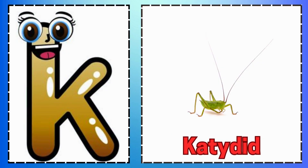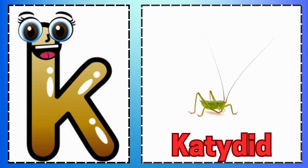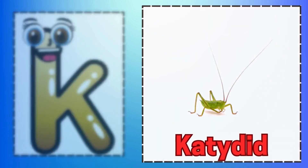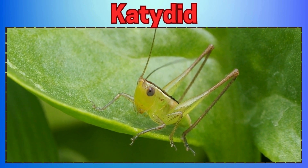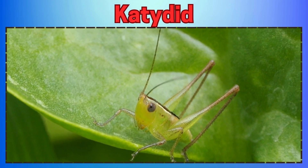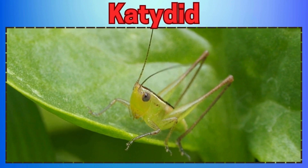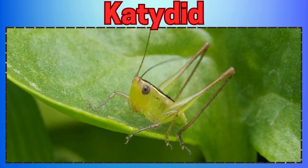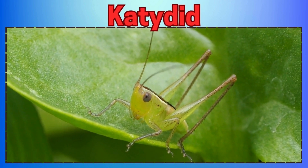W is for Water Strider. X is for Xerces Blue, Though Now It's Gone. Y is for Yellow Jacket, Watch out for its Sting. Z is for Zebra Swallowtail Spreading its Wings.